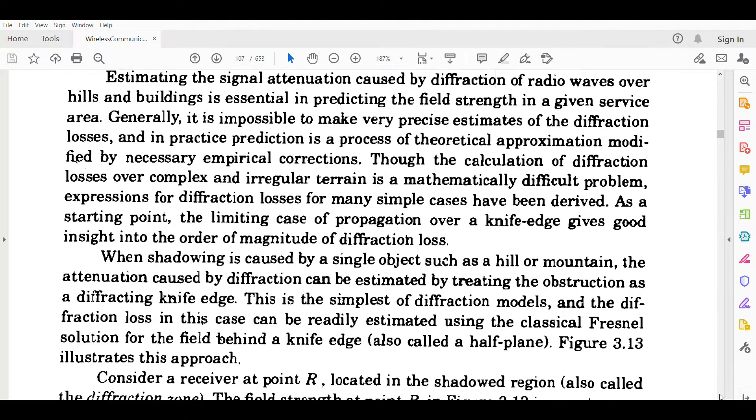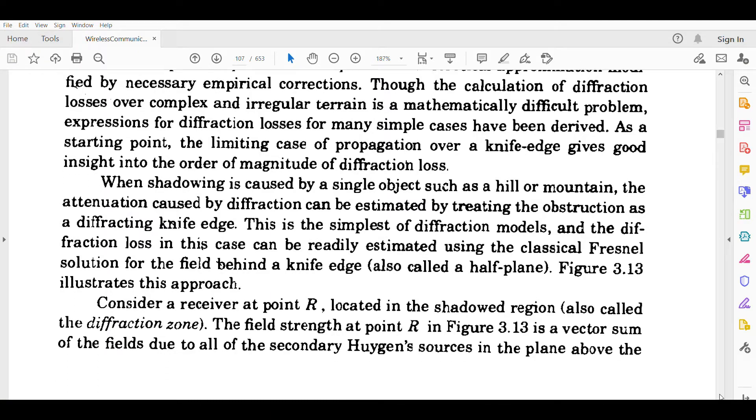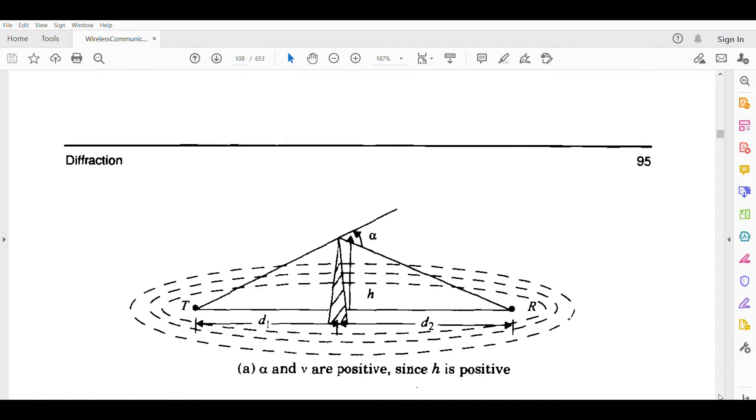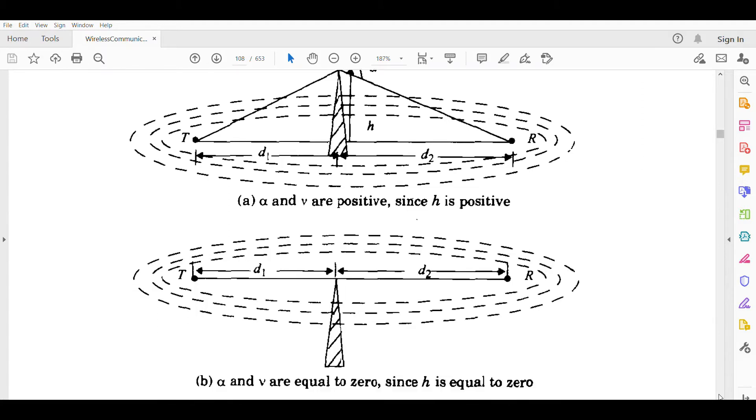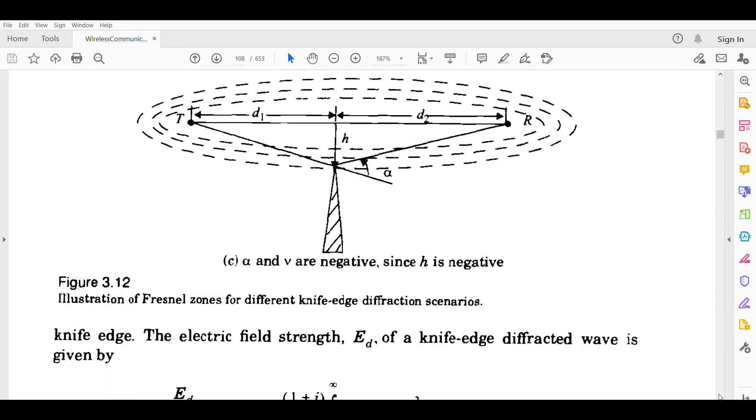Figure 3.13 illustrates this approach. Consider a receiver at point R located in the shadowed region. The field strength at point R is a vector sum of the fields due to all of the secondary Huygens sources in the plane above the knife edge, and the electric field strength ED of a knife edge diffracted wave is given by an equation.